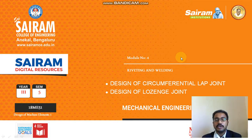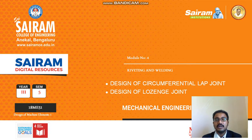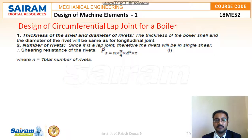Hello everyone. In this video we will be discussing two design procedures: the design of circumferential lap joint and design of lozen joint. Already in video 4 we had a discussion on design of longitudinal butt joint, so these two will be the continuation of those design videos and it is almost similar. First we will discuss about the design of circumferential lap joint on the boiler.